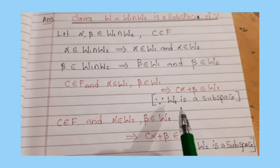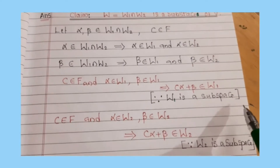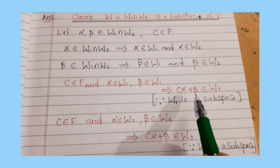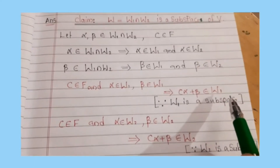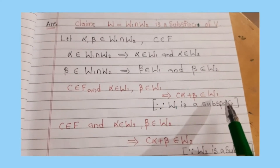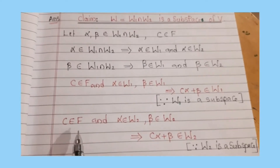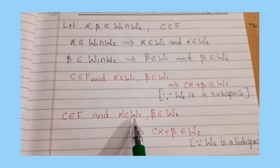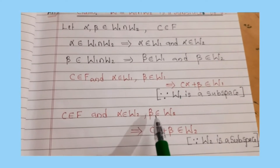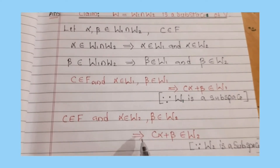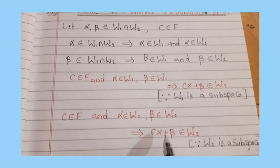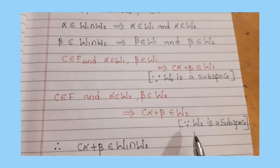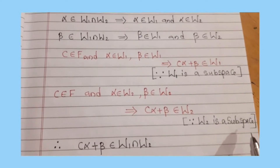Since W1 is a subspace, c·alpha + beta belongs to W1. Also, c belongs to F and alpha, beta belong to W2, which implies c·alpha + beta belongs to W2, since W2 is a subspace.